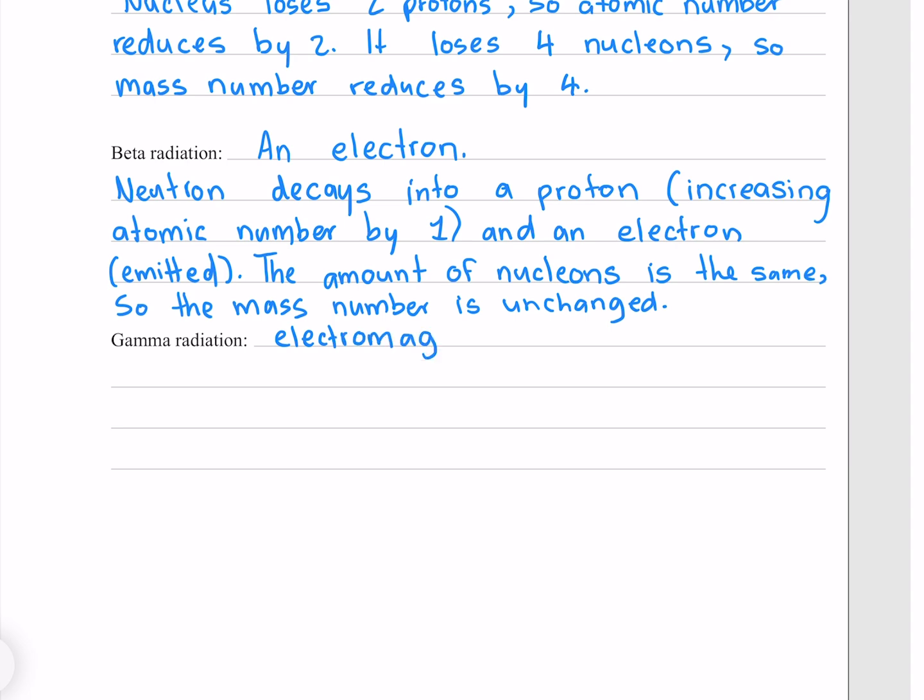Gamma radiation is an electromagnetic wave. Following a decay, energy is released, but the atomic and mass numbers are unaffected.